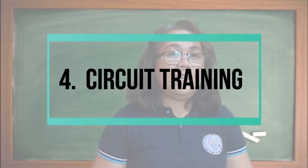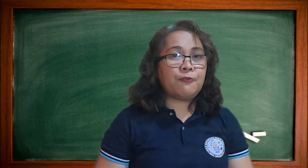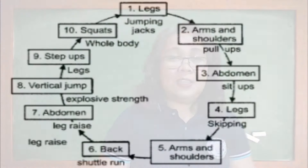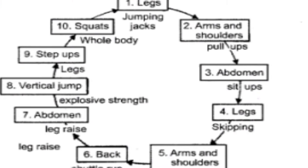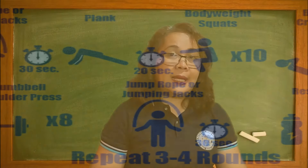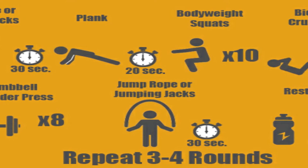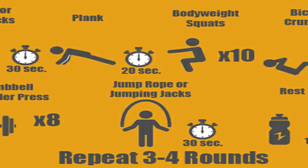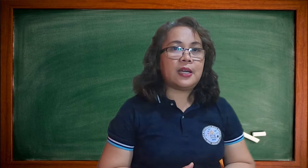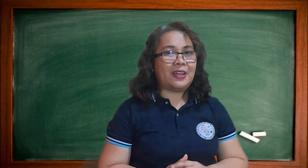Circuit training involves a series of exercises known as stations being performed one after the other. Typically, circuit training involves 8 to 10 stations performed for a certain number of repetitions or time. When planning a circuit, it is important to vary the muscle groups you work and think about the number of repetitions or time spent on each station. A circuit can be designed to develop any aspect of fitness but tends to be used for general body conditioning.